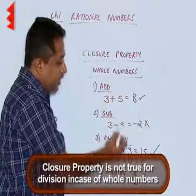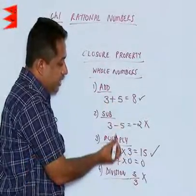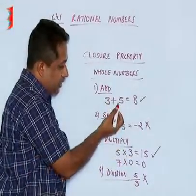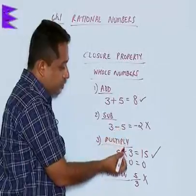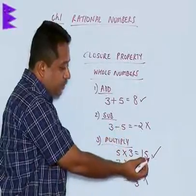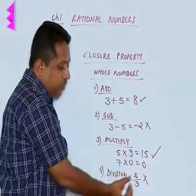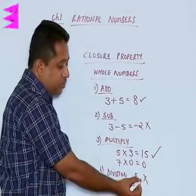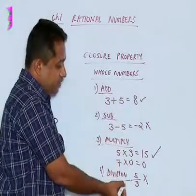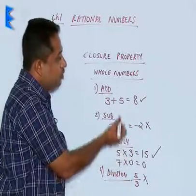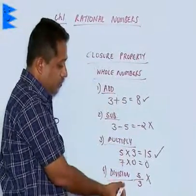So, to summarize: for addition it is true, for subtraction it is not true, for multiplication it is true and for division it is not true. Here we have some examples to verify the closure property for whole numbers.